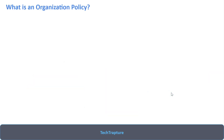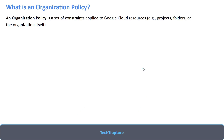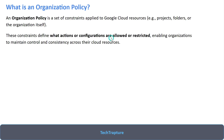Organization policy is a set of constraints applied on Google Cloud resources. It can be applied at the organization level, folders level, or the project level. Many learners at the initial stage get confused between IAM policy and organization policy.